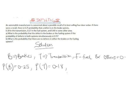We are given that the probability of a defect in the fuel system, P(F), is 0.17. And for the other parts, the probability P(O) is given to be 0.40.